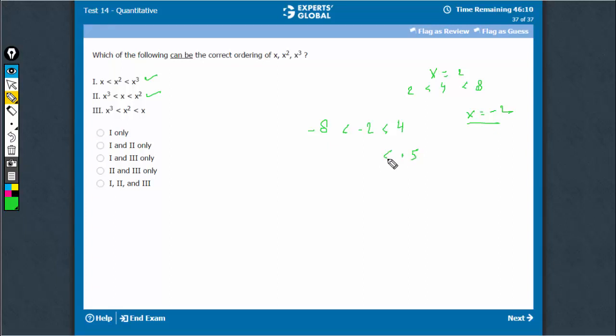then 0.5 is less than, sorry, is greater than 0.5 squared, which is 0.25, is less than 0.5 cubed, which is 0.125. So this is possible for x is equal to 0.5.